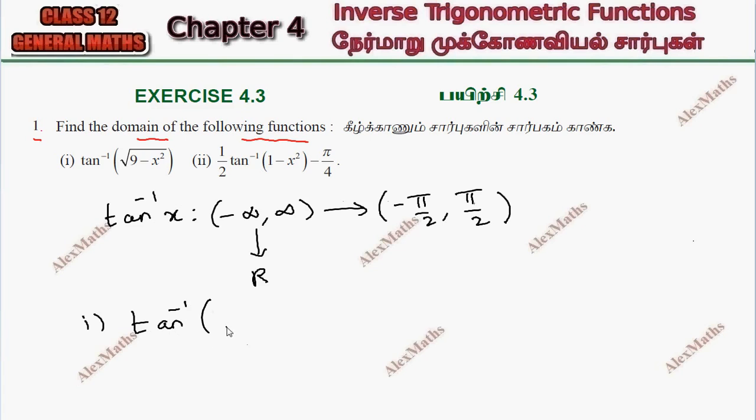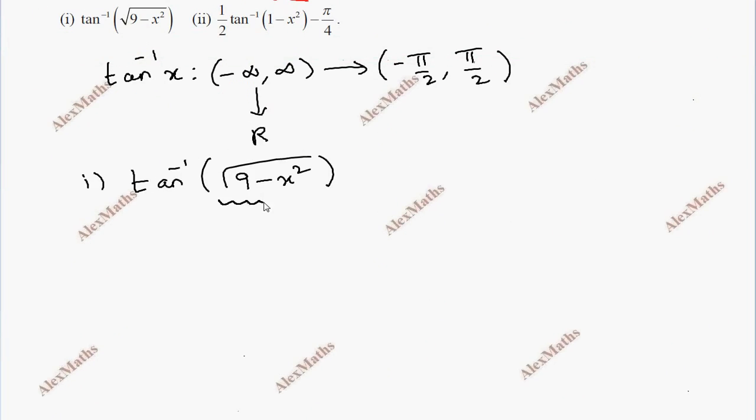Tan inverse of root 9 minus x square. It can belong to minus infinity to infinity, but under the root we cannot have a negative value.